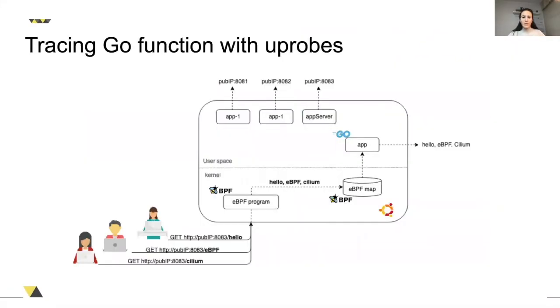Let's go back to the next example. We are going to use a different approach. eBPF programs can be attached to different events: kprobes, tracepoints, network packets, and in this case, we'll be attaching ours to uprobes events from the user space.